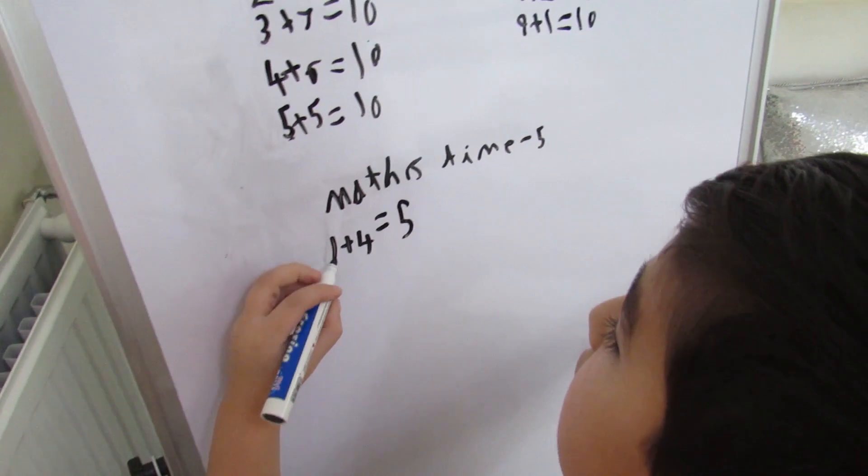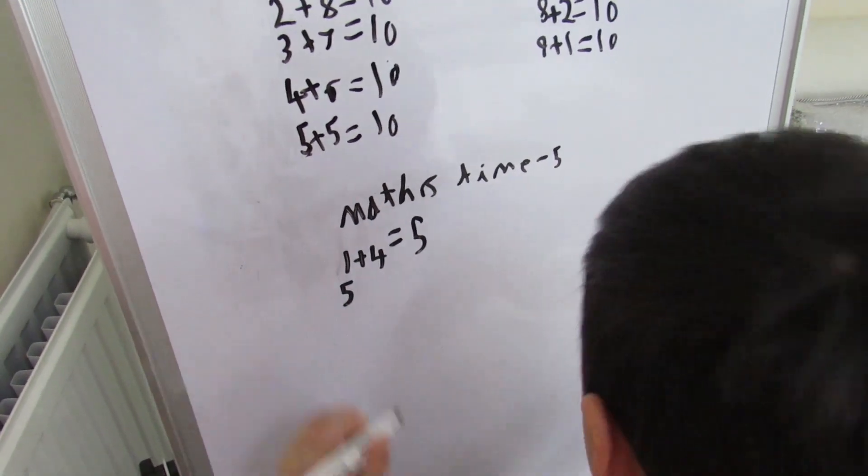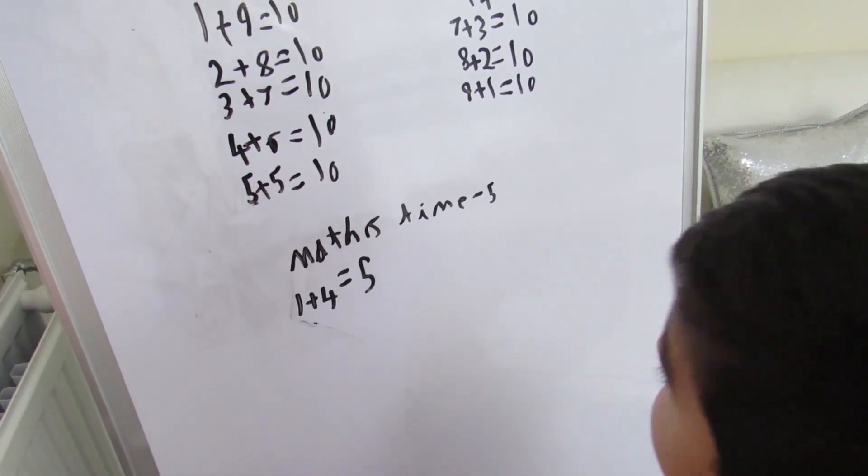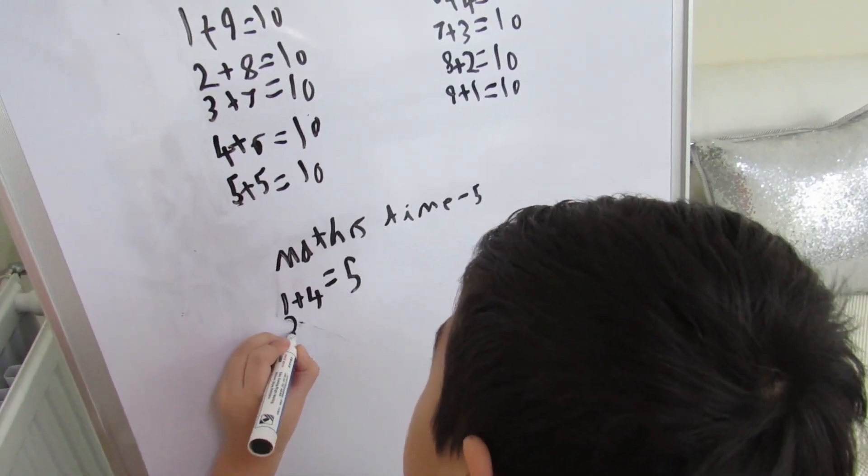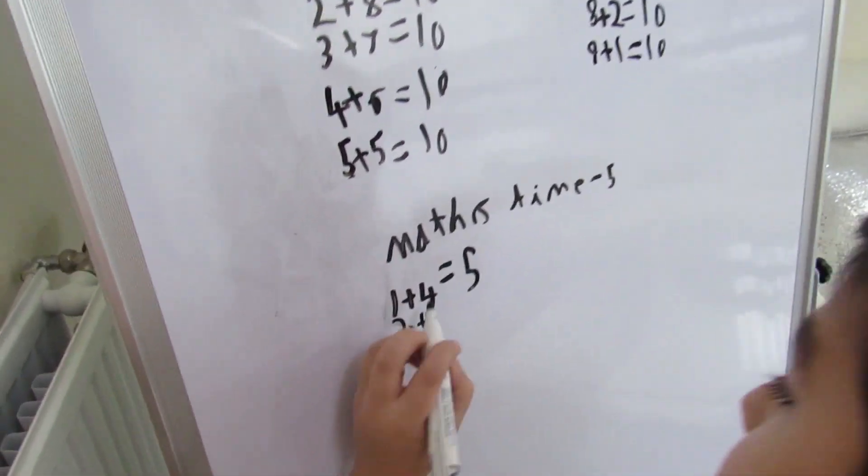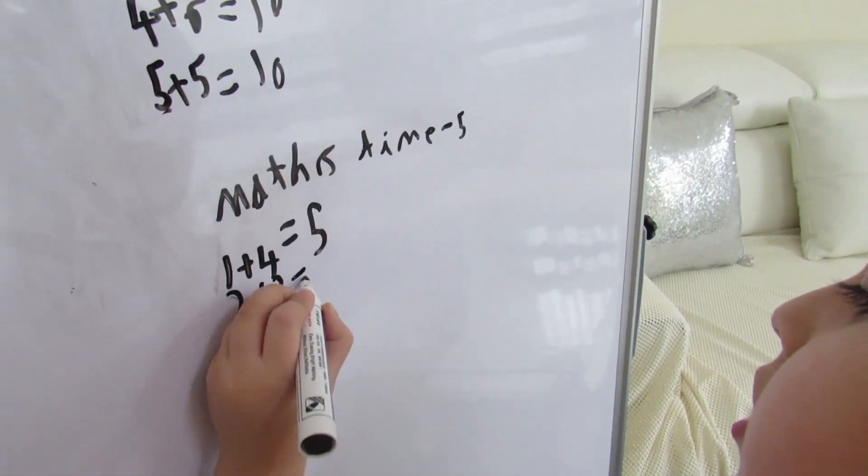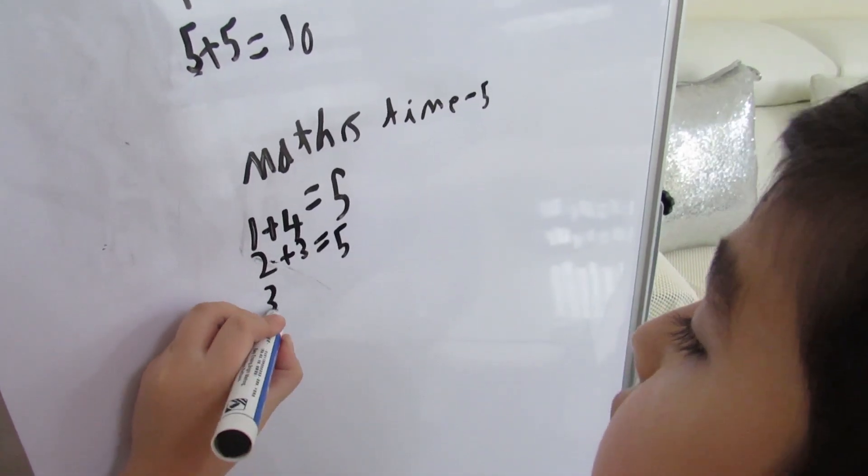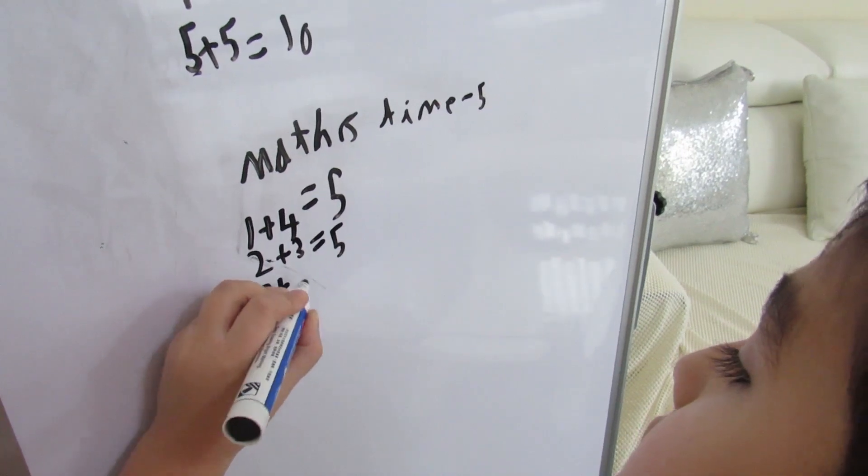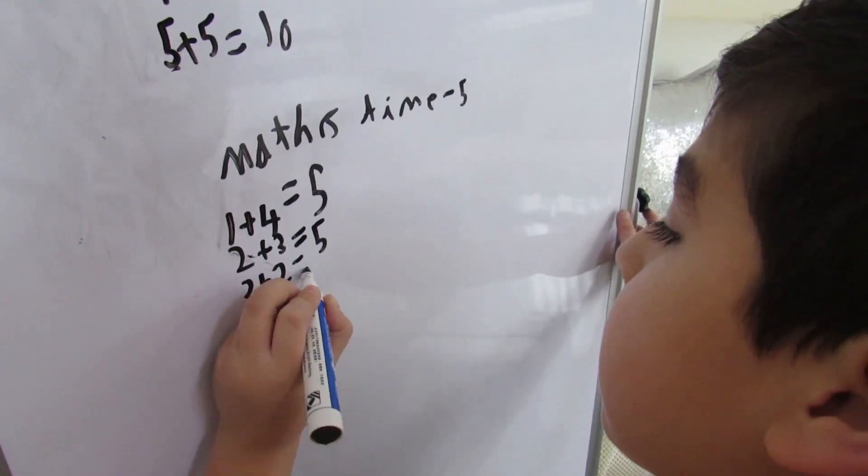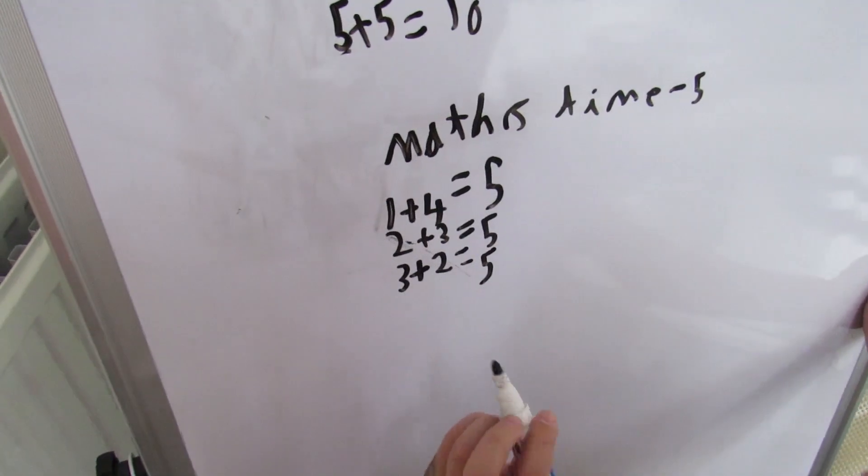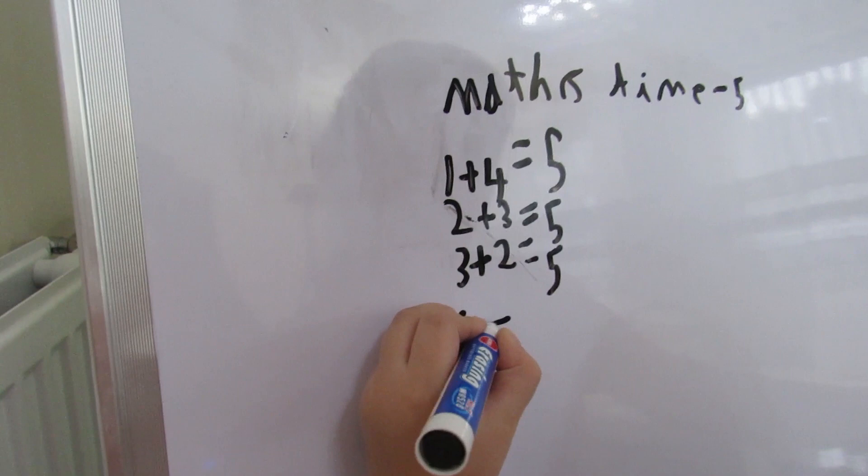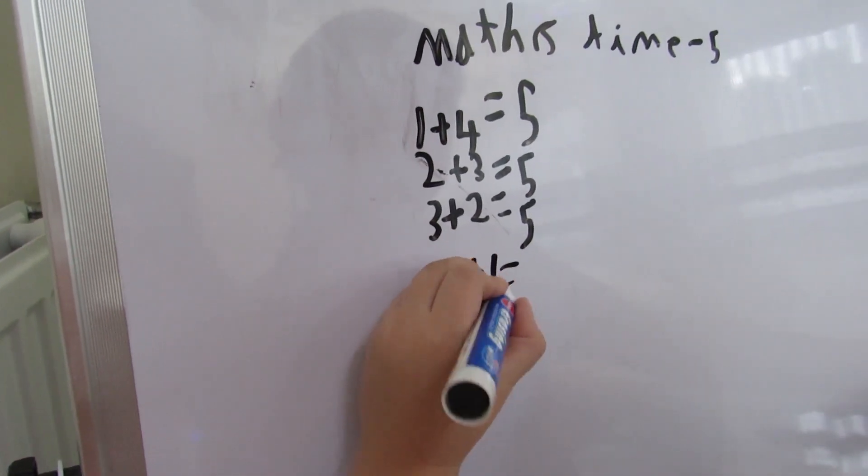The second one is two plus three equals five. The third way is three plus two equals five. The fourth way is four plus one equals five.